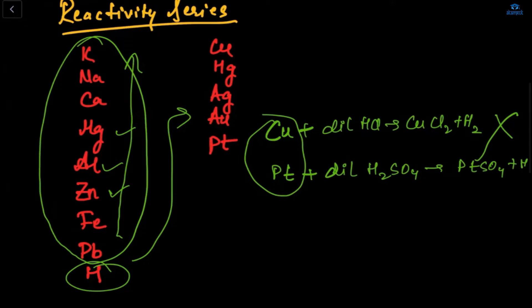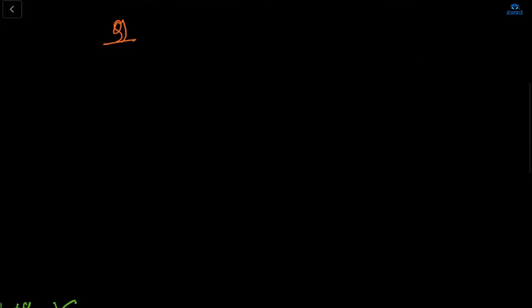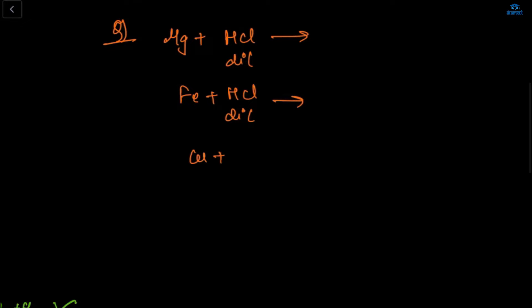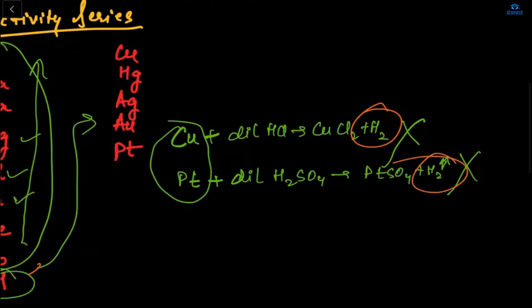Let me give you some questions: magnesium with dilute HCl — what product? Iron with dilute HCl — what product? Copper with dilute HCl — what product? Na with dilute HCl — what product? Remember: above hydrogen, every metal evolves H₂ gas; below hydrogen, H₂ gas is not liberated.